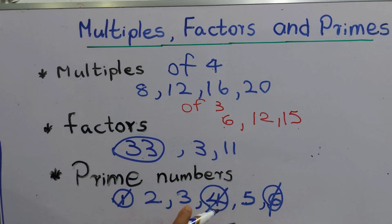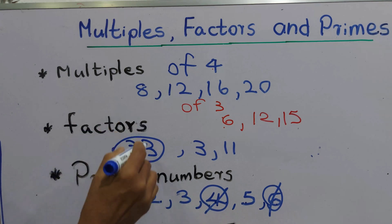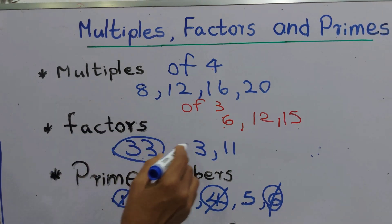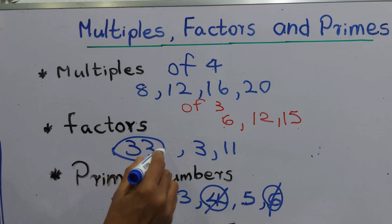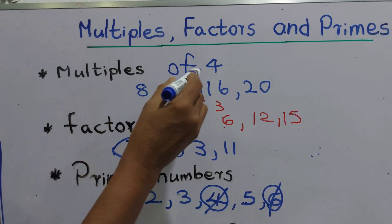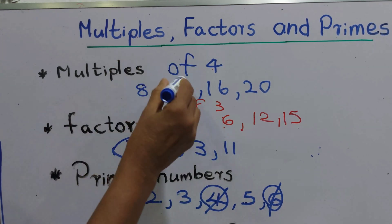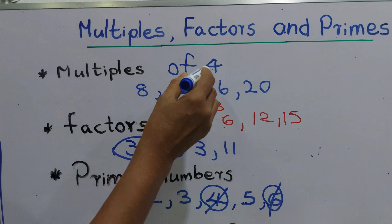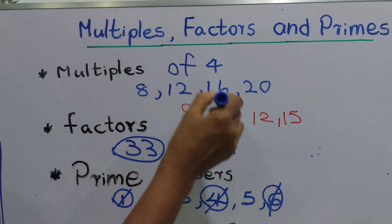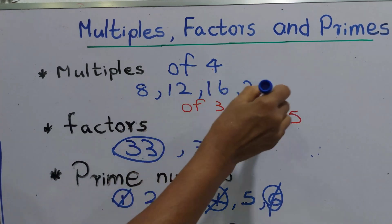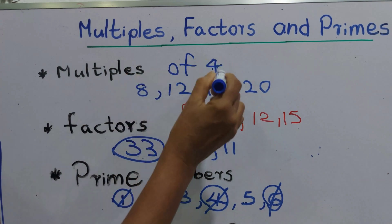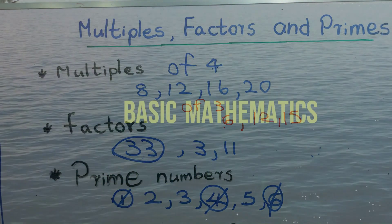Those are the prime numbers and factors. We can take a number and find out its factors. For multiples, we take a number and multiply by that figure — those are the multiples.